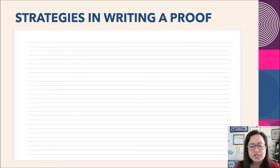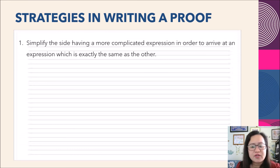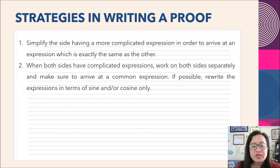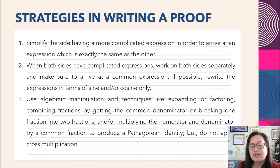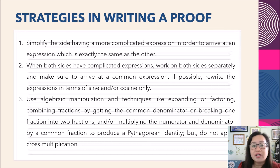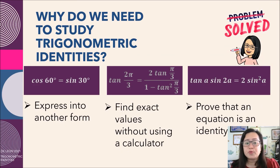Here are some suggested strategies for writing a proof. First, simplify the side with the more complicated expression to arrive at an expression equal to the other side. Second, when both sides have a complicated expression, work on both sides separately and arrive at a common expression. If possible, rewrite everything in terms of sine and cosine only. Third, use algebraic manipulation such as expanding or factoring, combining fractions by finding a common denominator, breaking fractions, or multiplying numerator and denominator to produce a Pythagorean identity — but do not apply cross-multiplication. I hope you were able to learn from today's lesson on trigonometric identities. See you next time!